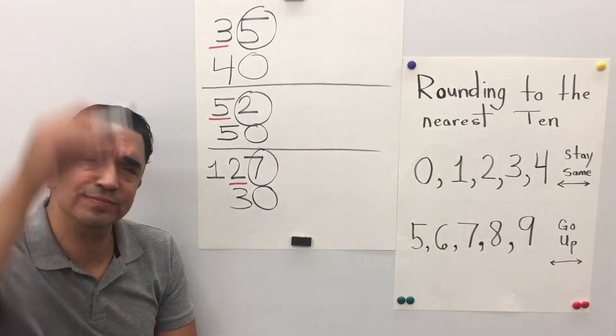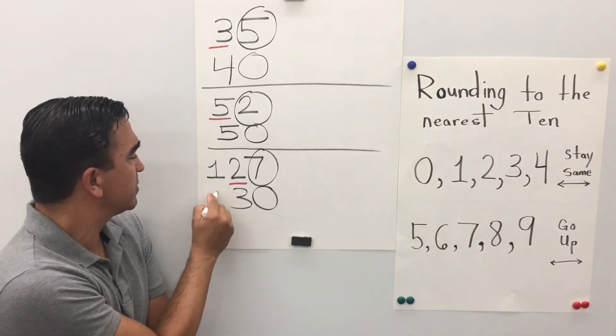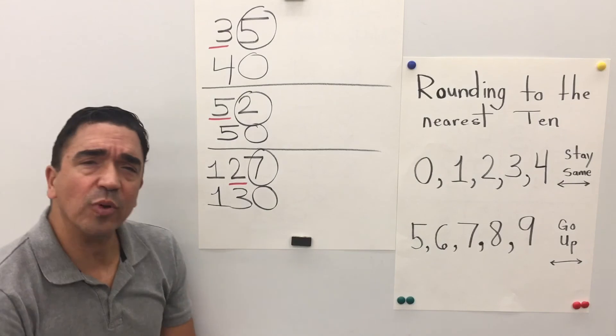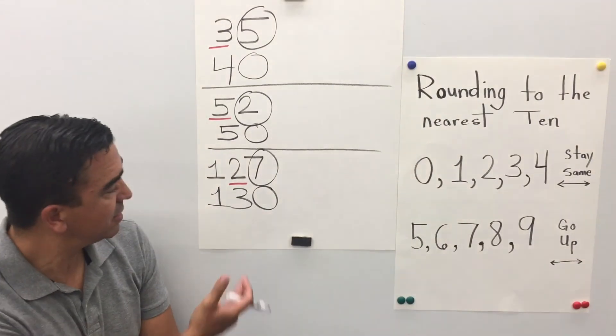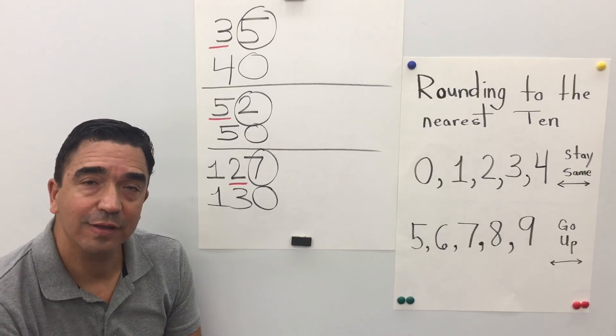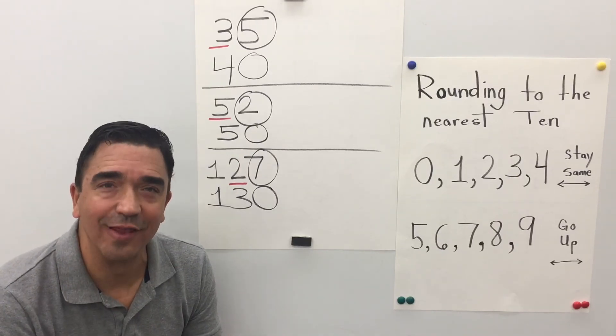And the 1? We're going to just drop it. So 127 rounded to the nearest ten equals 130. And that concludes our lesson.